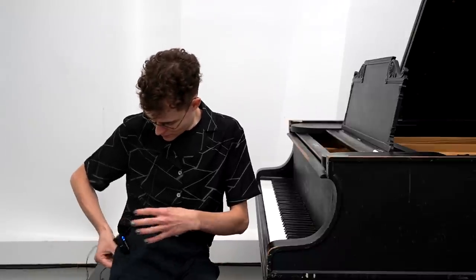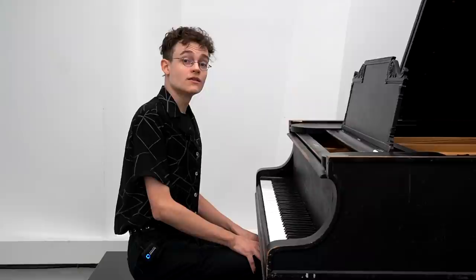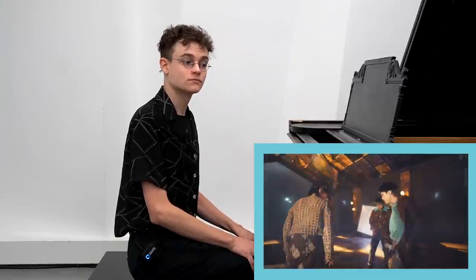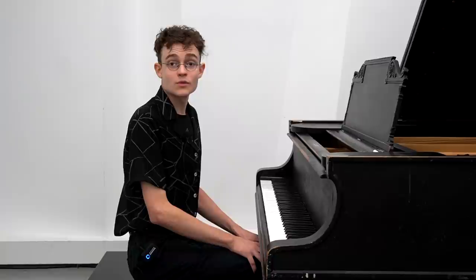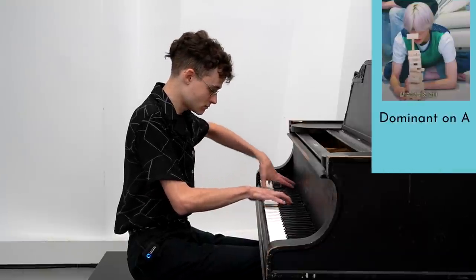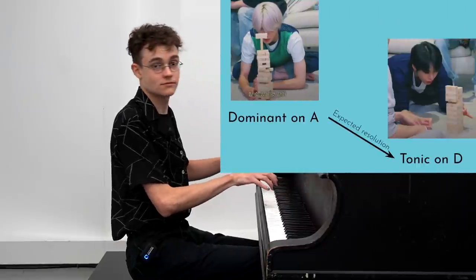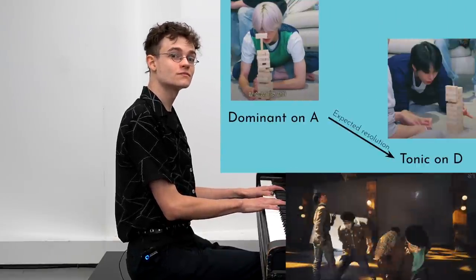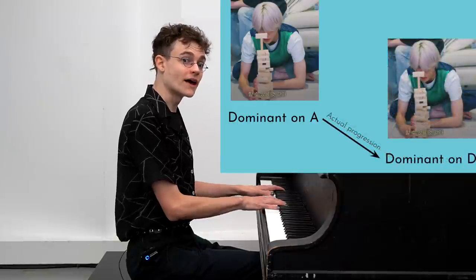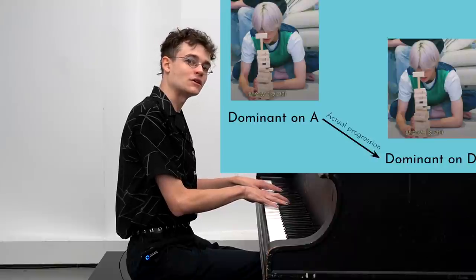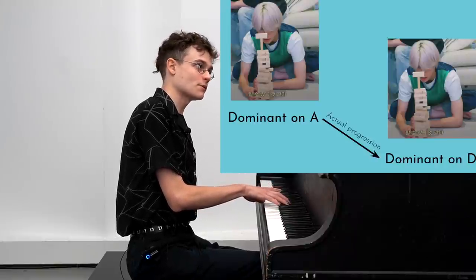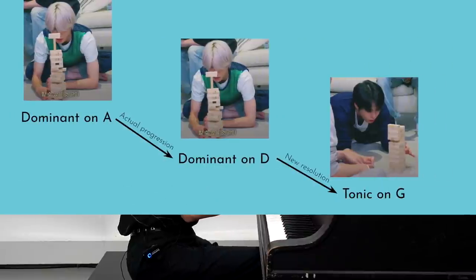If the dominant is characterized by instability and the tonic by stability, what happens if we modify the notes in a chord to make it more or less stable? To understand this, let's take a detour to 'Don't Call Me.' This part sounds like a pretty unstable chord built on A — sounds like a dominant. It'll probably resolve to D. But that's not what happens. It actually goes to something that sounds a lot like a dominant harmony, but now built on D, which would probably resolve to a tonic harmony built on G.